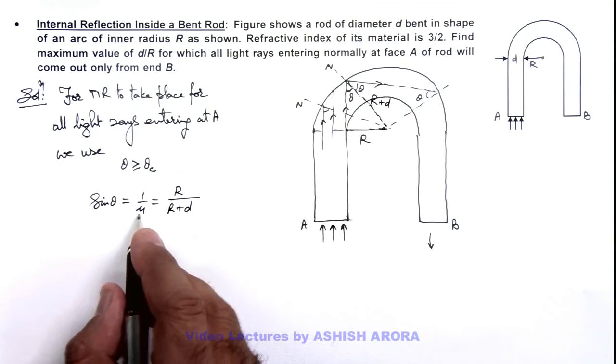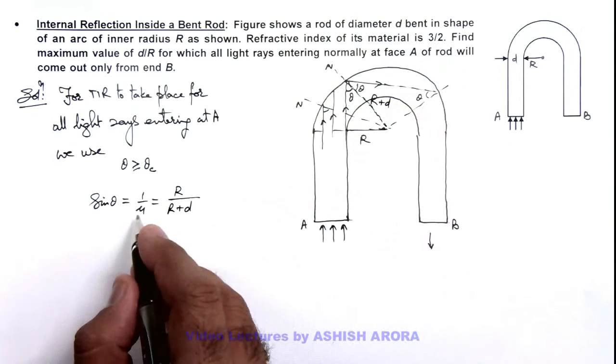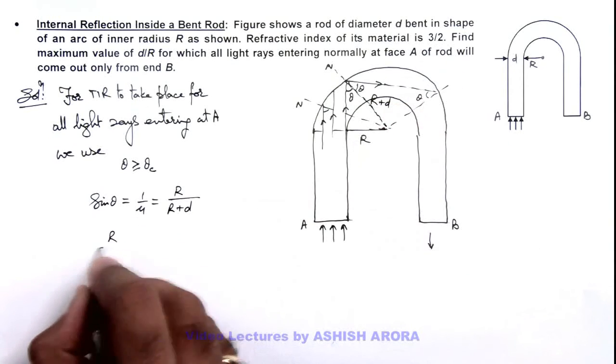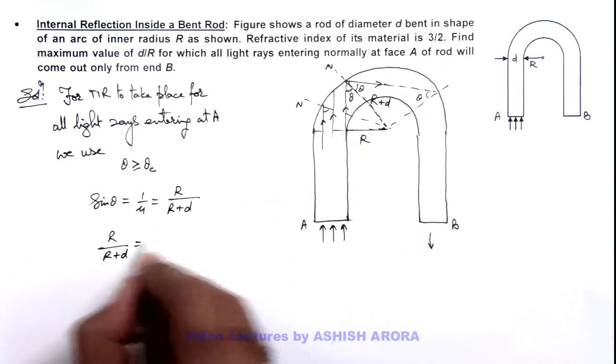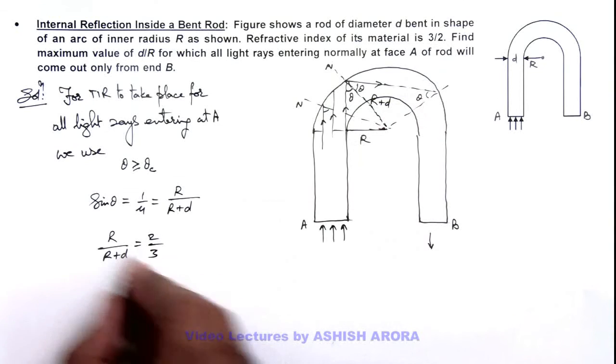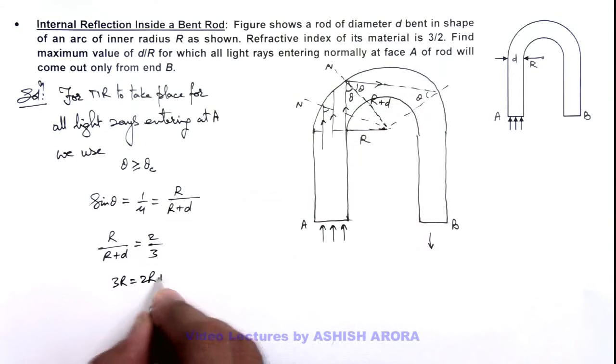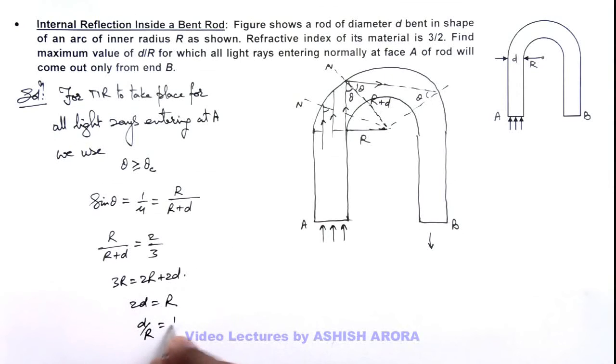And if we substitute the value of mu which is given as 3 by 2, here we can see it is r by r plus d equals 2 by 3. And it is 3r equals 2r plus 2d, which gives 2d equals r, and the value of d by r we are getting is 1 by 2.